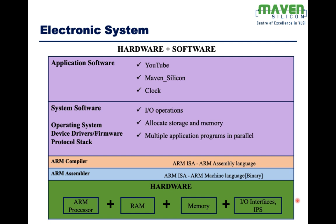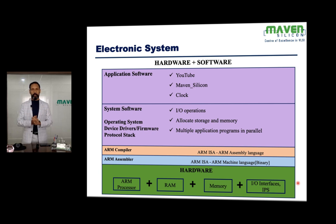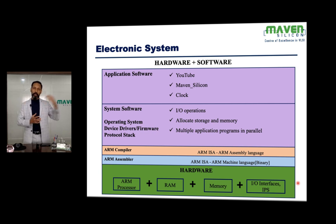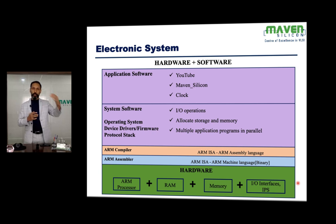In addition to the application software, there will be a system software. What is system software? System software is the software that manages the hardware — basically, it provides the interface between application software and the hardware. This system software is composed of various components like operating system, device drivers, and protocol stack. The operating system is the main component. Basically, the operating system provides the rules for how the application software should interact with the hardware, and also provides the necessary device drivers and firmwares, including the protocol stack.